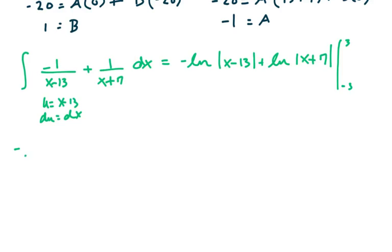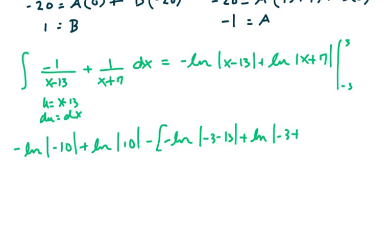We're left with minus ln of, x is 3, so this is minus 10, the absolute value plus ln of 10 minus the quantity minus ln of minus 3 minus 13 plus ln of minus 3 plus 7.